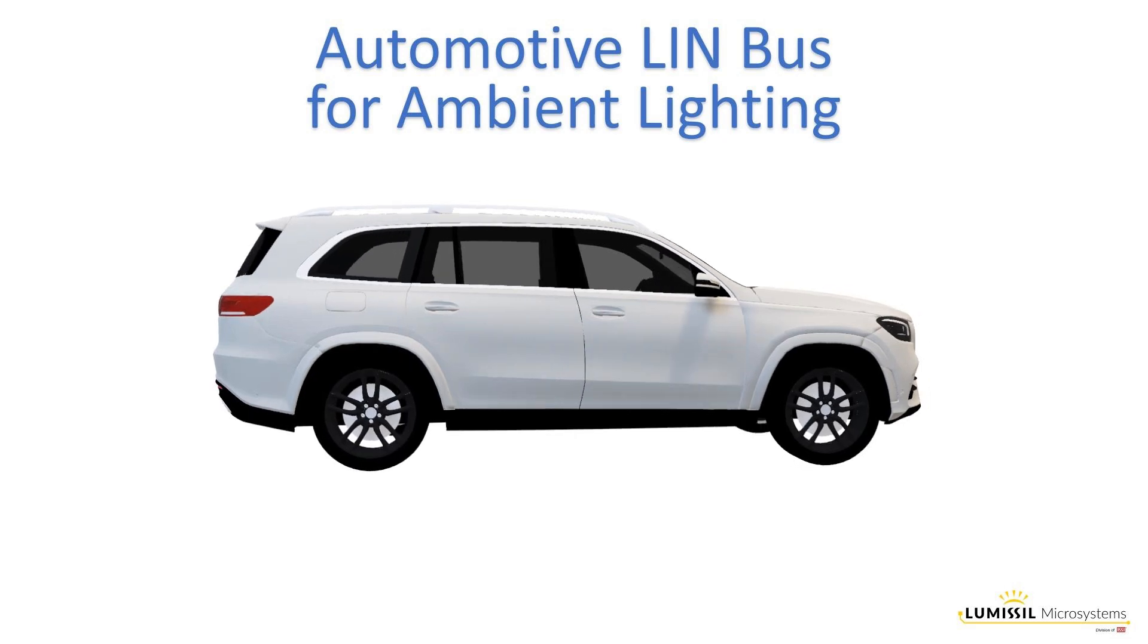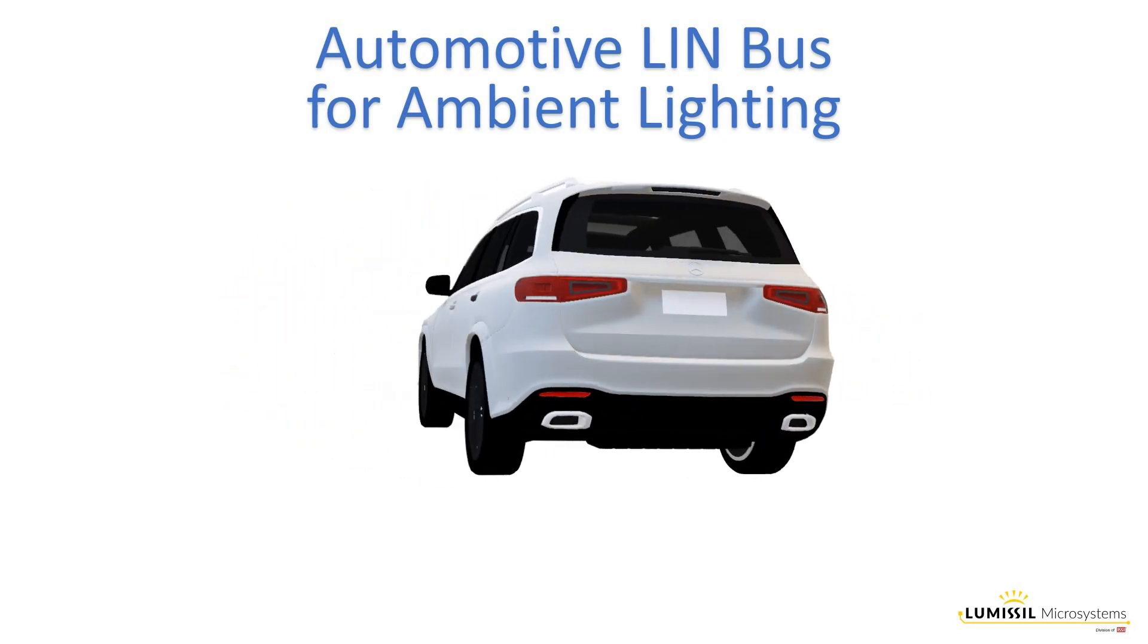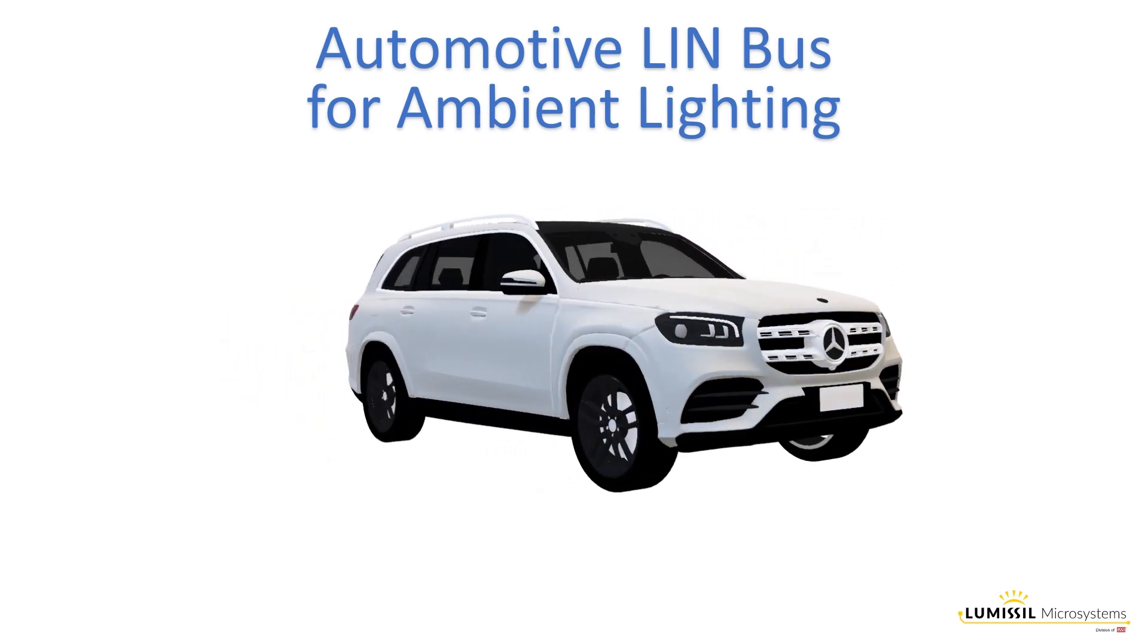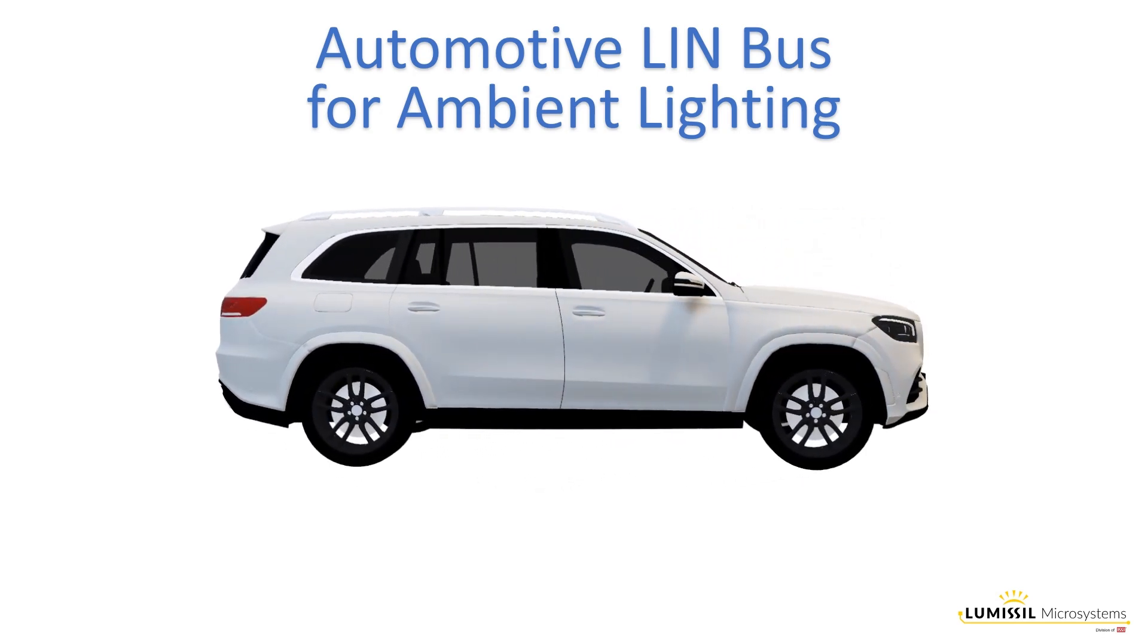This video is an overview of the Local Interconnect Network, or LIN bus, as used in vehicle ambient lighting applications. The LIN bus is a low-cost serial communication protocol used in automotive networks to reduce and simplify a vehicle's wiring architecture. It is a slow 20 kilobits per second bus, meaning it can't be used in external safety-related applications that require a fast response.